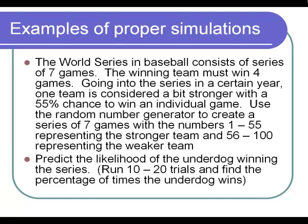And if you have four or more numbers that are 56 to 100, then the weaker team is winning. So you want to run a trial and see who won the World Series. Did the stronger team win or did the weaker team win?